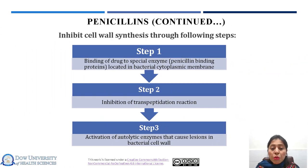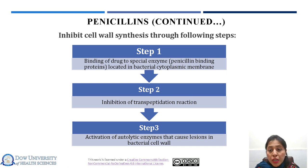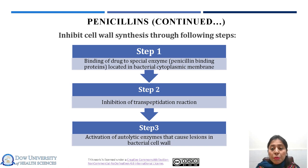Now we will talk about the mechanism of action of penicillin. Basically, it is a multi-step process that includes three basic steps. First is the binding of the drug to special enzymes known as penicillin binding proteins, which are located in the bacterial cytoplasmic membrane. The second step is the inhibition of the transpeptidation reaction. Transpeptidation is the cross-linking between the linear peptidoglycan chain constituents of the cell wall. Then, the activation of autolytic enzymes occurs, causing lesions in the bacterial cell wall and ultimately the death of the bacterial cell. Penicillin and other beta-lactam antibiotics work by inhibiting the activity of penicillin binding proteins — specifically, they bind to the active site of penicillin binding proteins and prevent them from forming peptide bonds between adjacent residues.